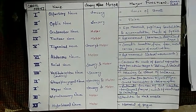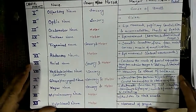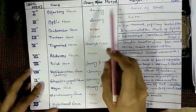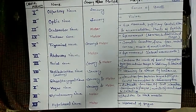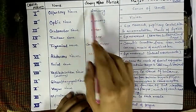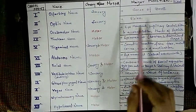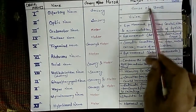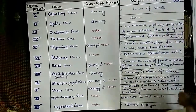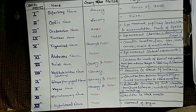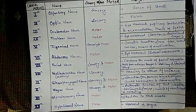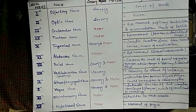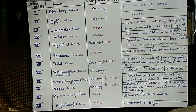There are 12 cranial nerves. The first is the olfactory nerve, which is a sensory nerve that sends information to the CNS — specifically the sense of smell. The second is the optic nerve, also a sensory nerve, and it governs vision.